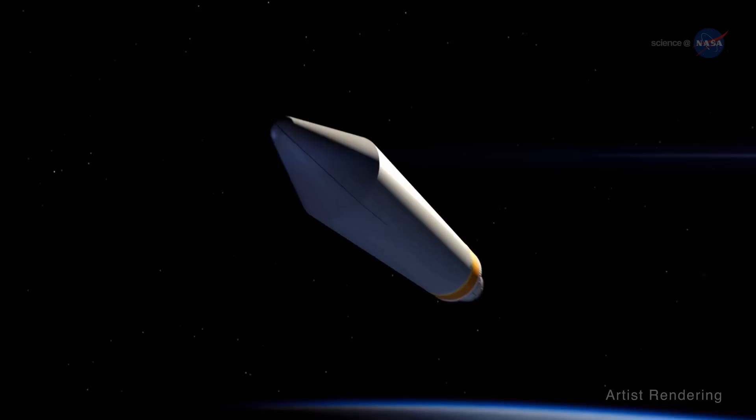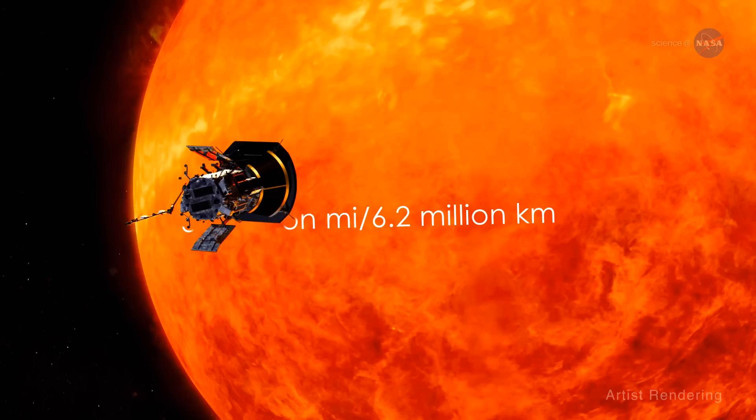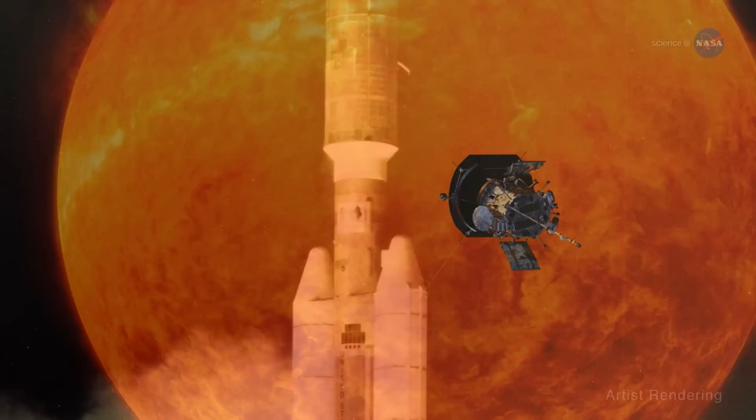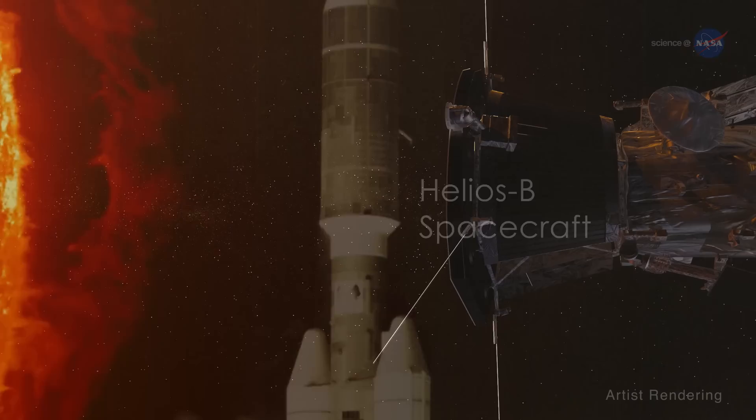In 2018, the Parker Solar Probe will launch from a Delta IV heavy rocket and travel approximately three months to take its first swing by the sun right through that atmosphere. Over seven years, it will get ever closer until ultimately it's within 3.9 million miles or 6.2 million kilometers of the sun's surface. That's so close that the previous record holder, the Helios B spacecraft, was seven times farther away.